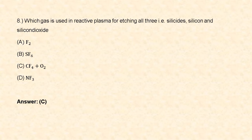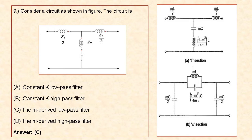Next question: consider a circuit shown in the figure. The circuit is: constant K low pass filter, constant K high pass filter, M-derived low pass filter, or M-derived high pass filter. The circuit shown is the T-section of an M-derived low pass filter, where Z₁ = M·L/2 and Z₂ = (1 − M²)/M · L. So option C is correct. For the pi section, we have M·C/2 on both sides and the center capacitance is (1 − M²)/(4M) · C.